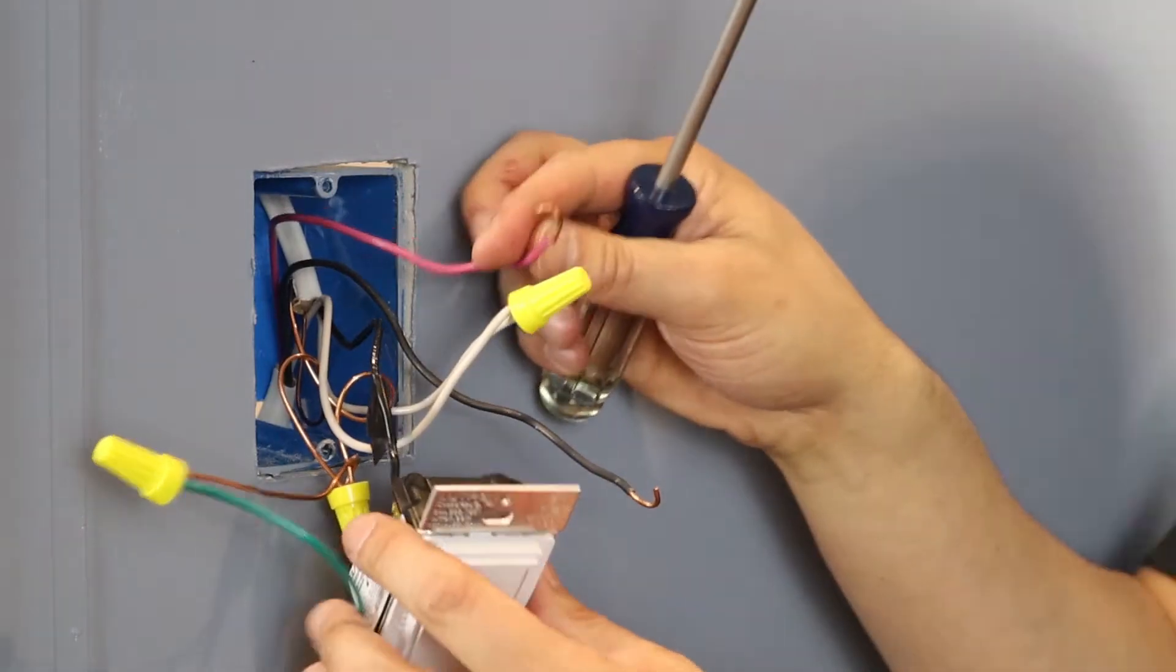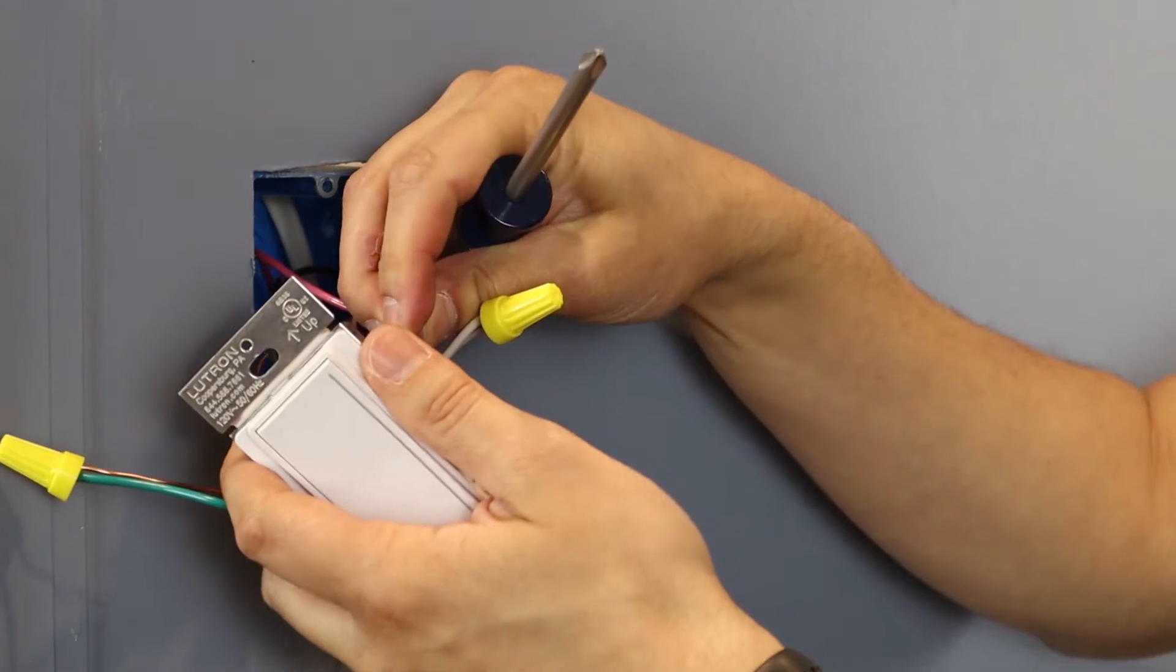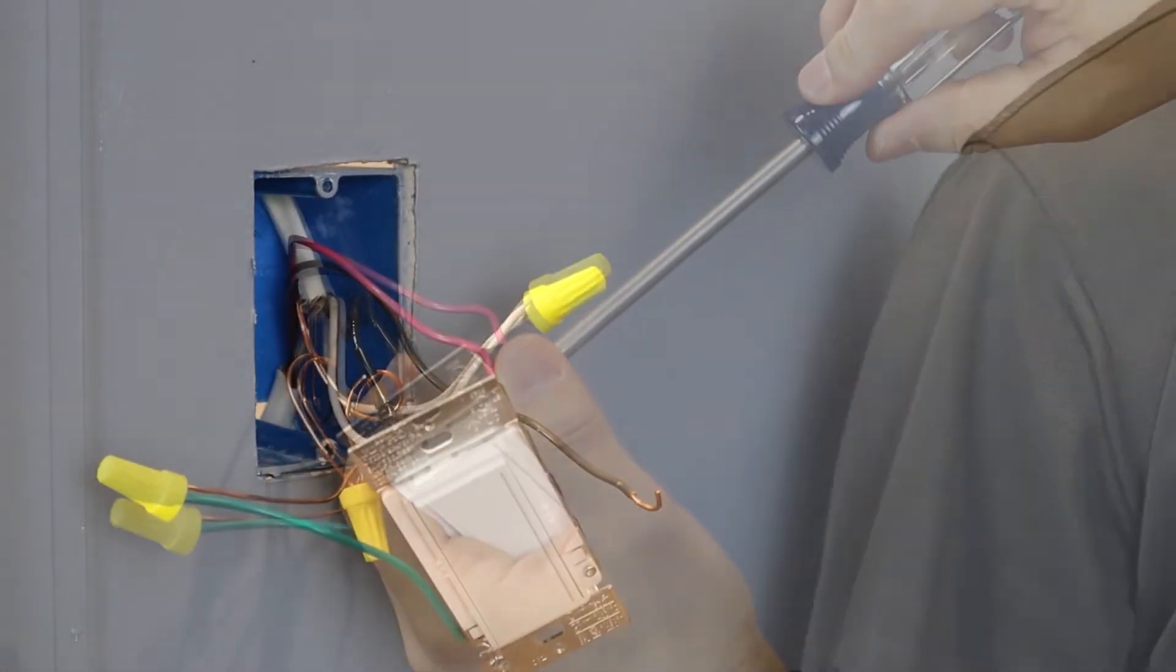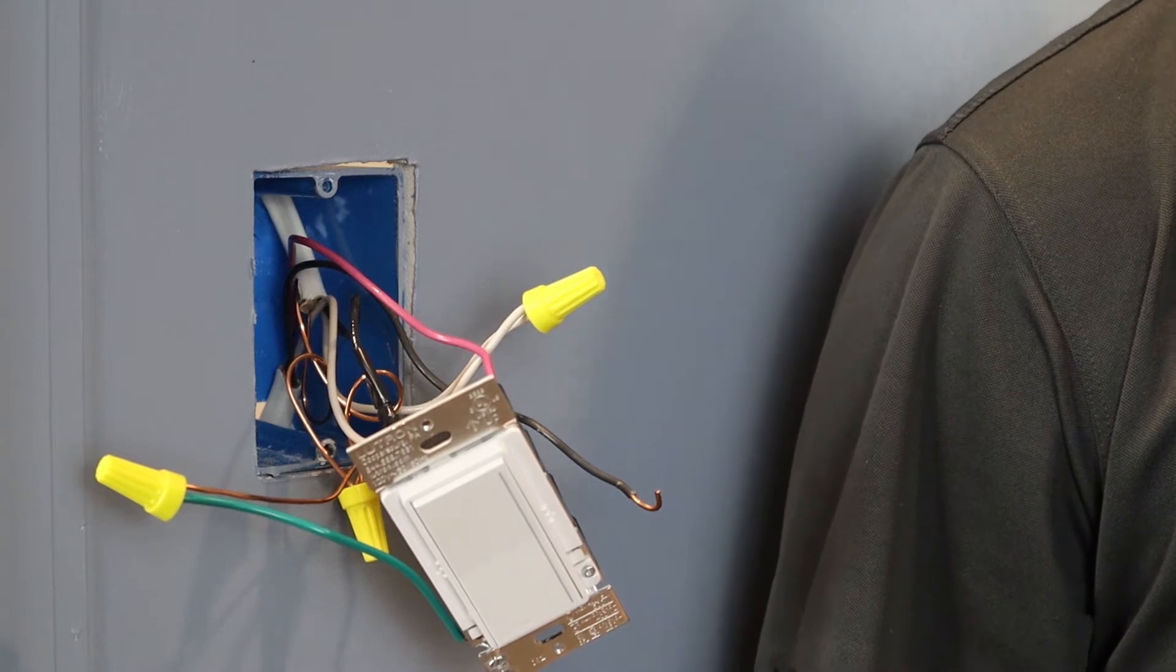In this example, we're going to attach the red wire to the blue screw. We're now going to attach the remaining wire to the black screw.